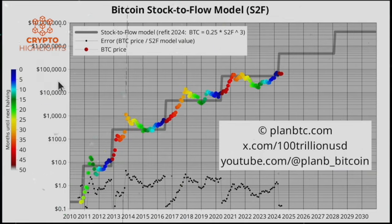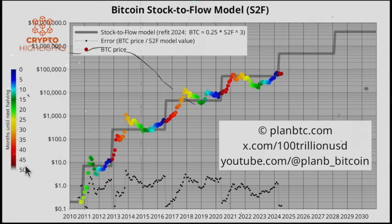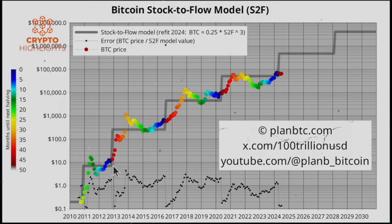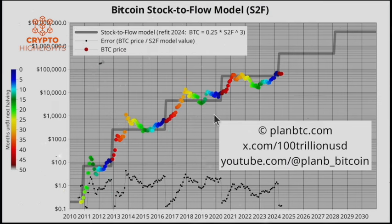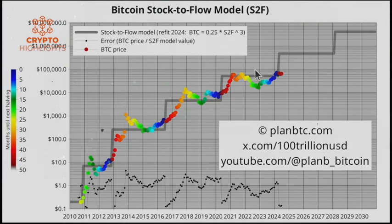So price is here, and then there's a third dimension — it's the color. Color here is months until the next halving. It's a timer from 48 months — about four years — counting down to zero, the month of the halving, which is blue. So we go from red to blue, from red to blue. This gives some situational awareness — for example, green is 15 months until the next halving, which is usually the bear market. You can compare cycle to cycle within the time series because of that third dimension.